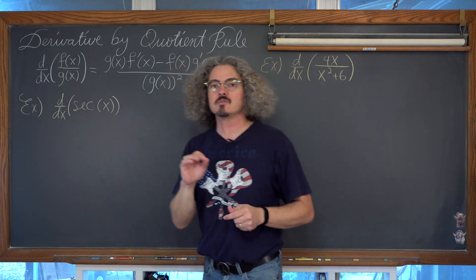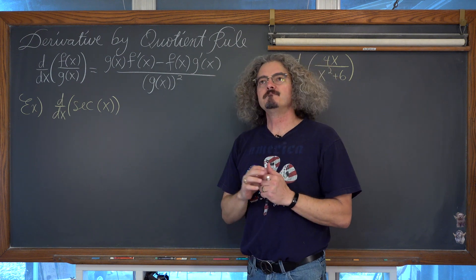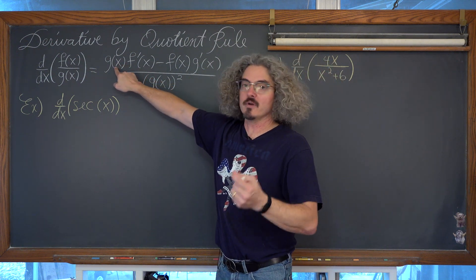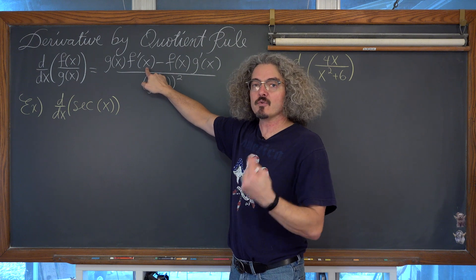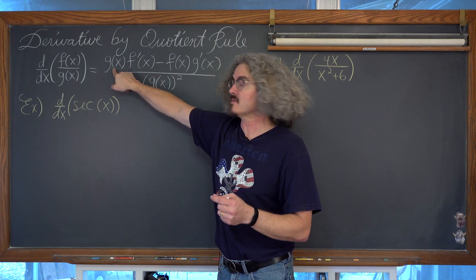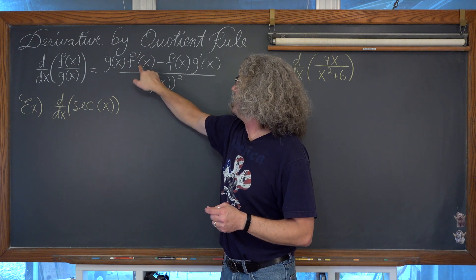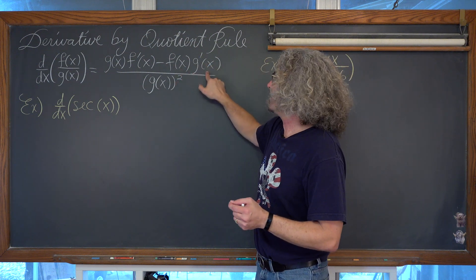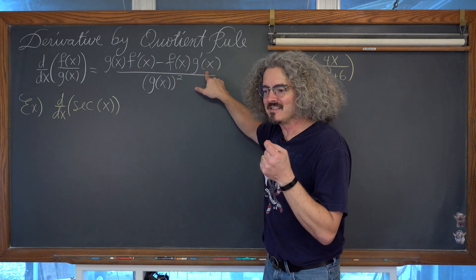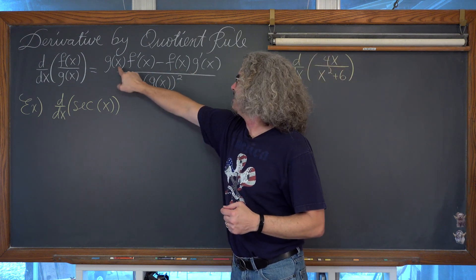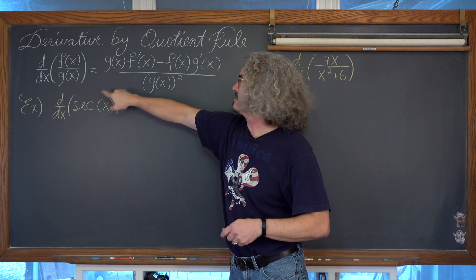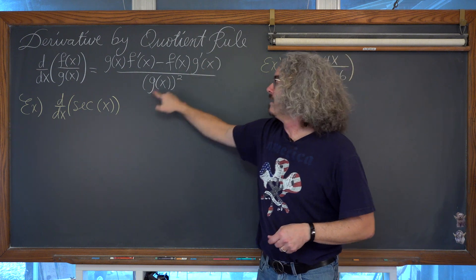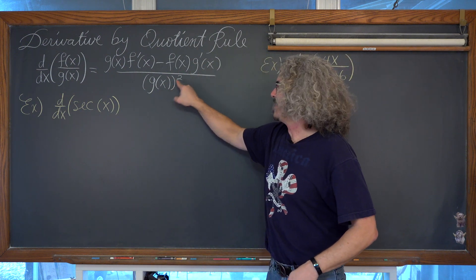So while this is the formula for the derivative of a quotient — the derivative of two functions being divided together — at least in my class, this is how I remember the rule: low d high, the denominator times the derivative of the numerator, low d high minus high d low, all over low low — the denominator squared.